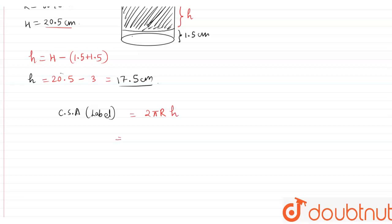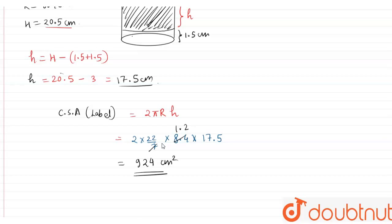So, we calculate it as 2 times (22/7) times the radius 8.4 times the height 17.5. Here, 7 gets cancelled with 8.4, giving 1.2. On multiplying, we get 924 cm². This is the curved surface area of the label. This is the answer.